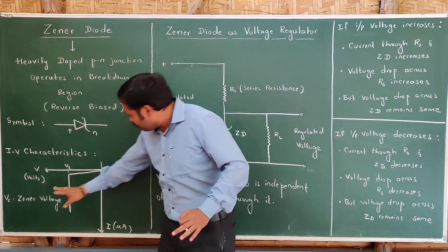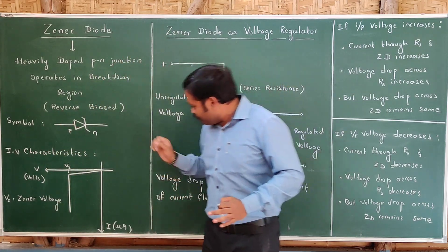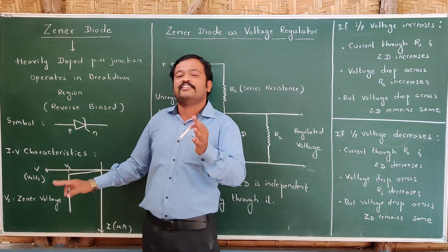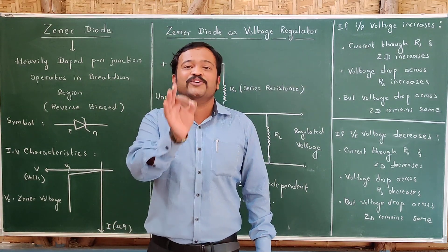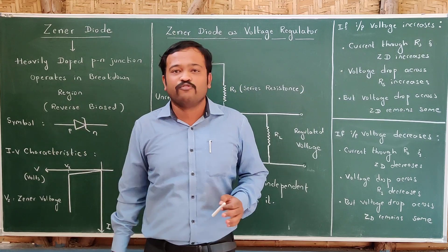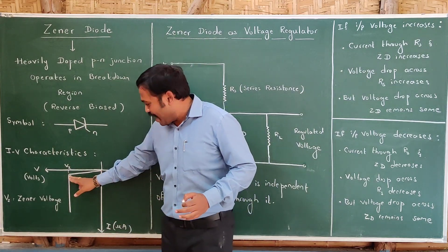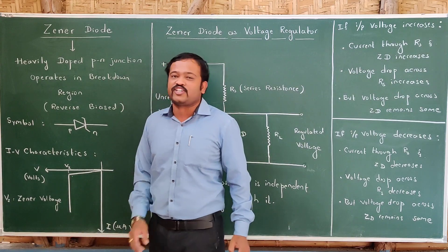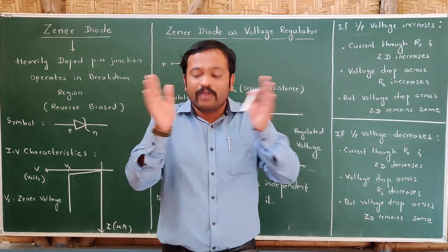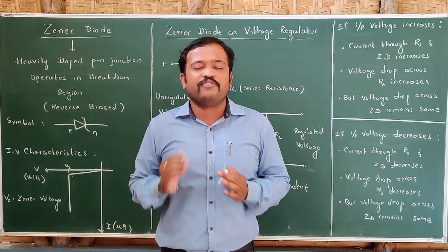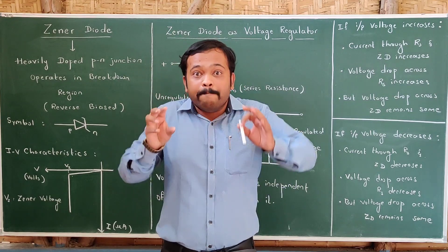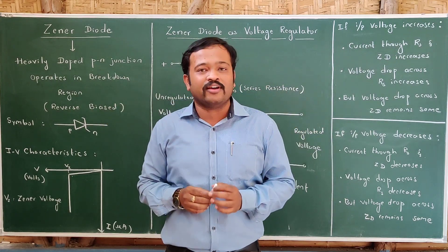Whenever the diode is reverse biased, we find that at the beginning there will be a small current. When it is reverse biased, charges flow due to the electric field, and due to the electric field, minority charges begin to flow. Small charges begin to flow and suddenly there will be an increase in charges. This is because it is heavily doped and we are connecting the reverse bias — when you connect reverse bias, the electric field will be more.